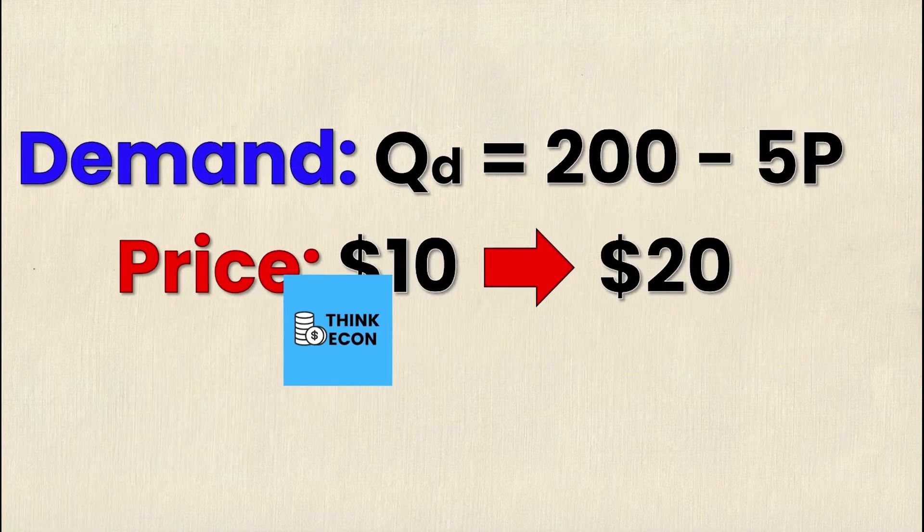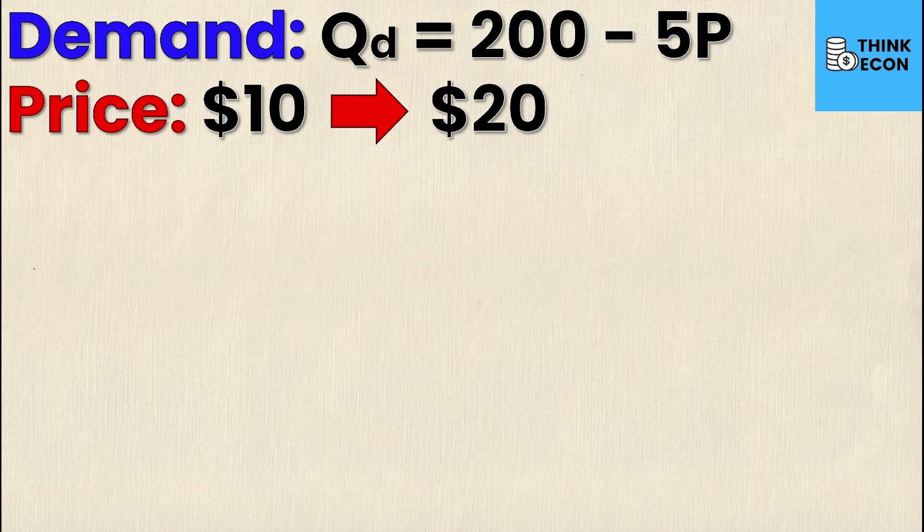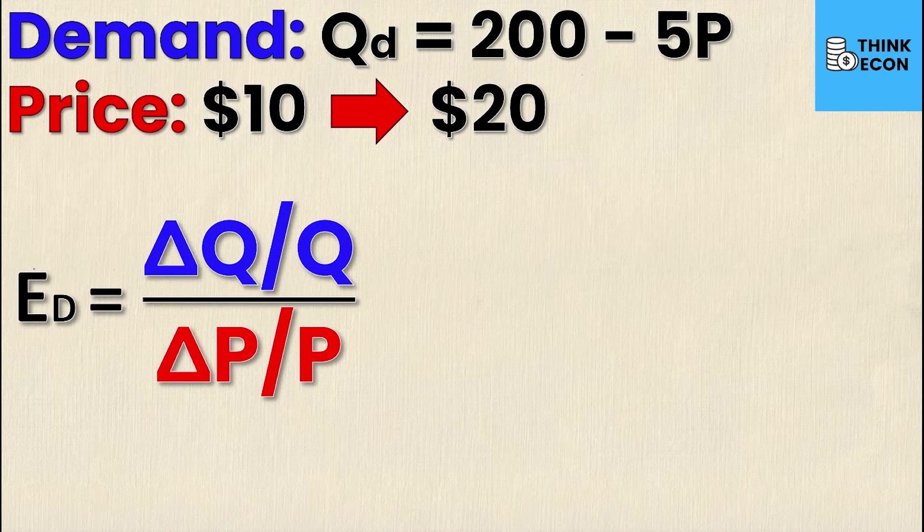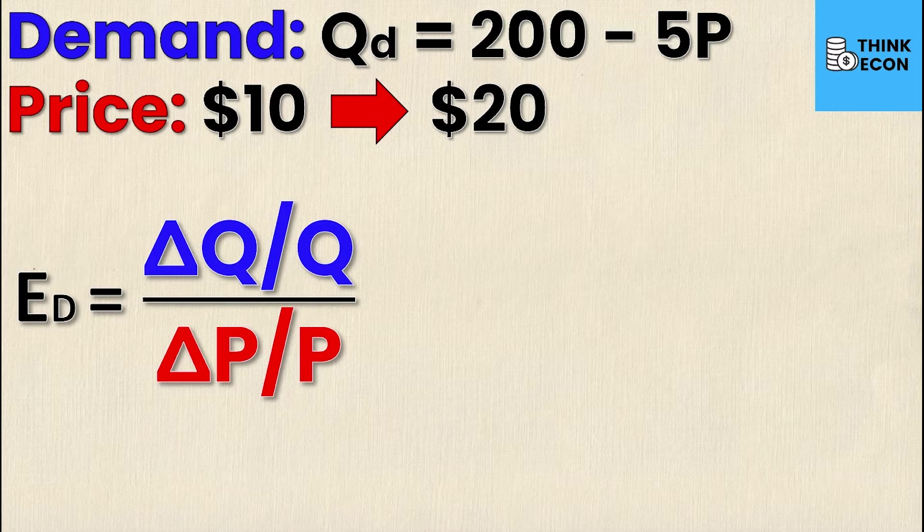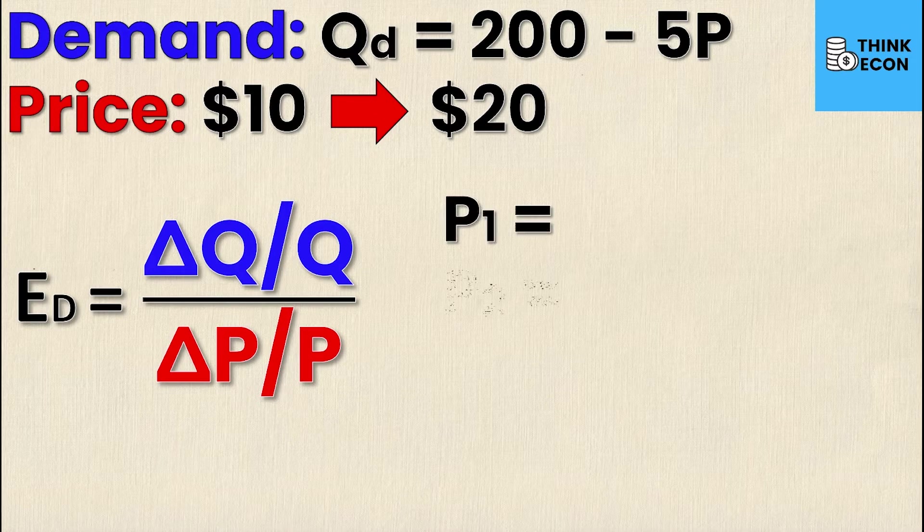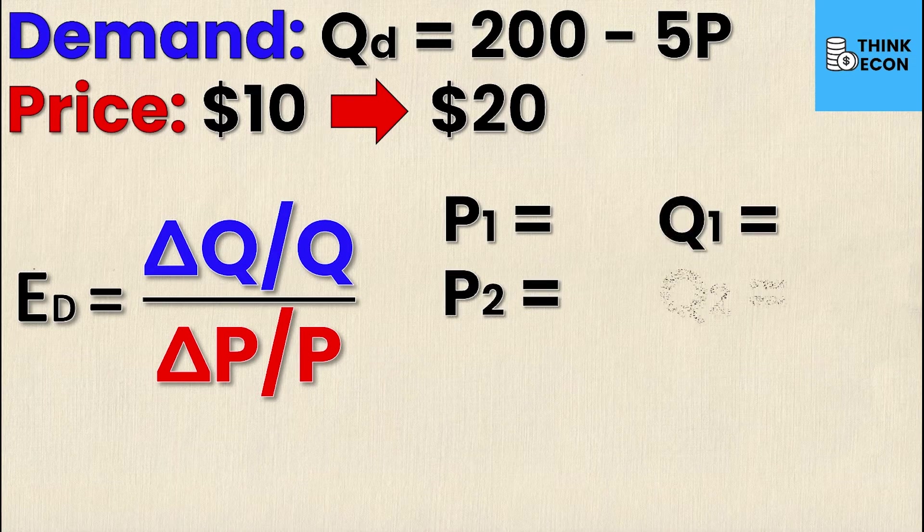So as promised, in this video we'll be calculating the elasticity of demand. To do that we need to remember the formula for elasticity of demand, and that's simply the change in Q, or the change in quantity, divided by quantity over the change in price divided by price. For this formula to work you need two different prices and two different quantities, so we're looking for a P1, P2, Q1, and a Q2.